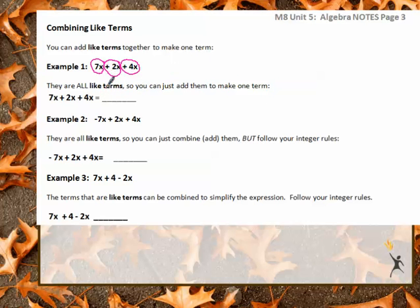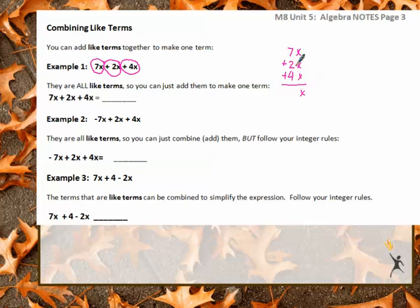If we think about 7X plus 2X plus 4X, it's almost like in elementary school where you stack them. All the X will stay, and 7 plus 2 plus 4 gives me 13X's. So my answer is going to be 13X.